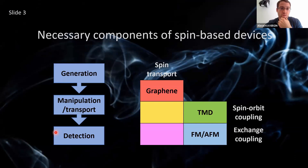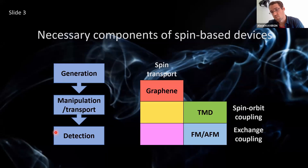I have drawn here a small diagram consisting of building blocks of any perspective or existing spin-based devices, which consists of generation of spin signal, manipulation of the transport, and then detection of the spin signal. And if I look at these blocks from the perspective of layered materials, the first thing that comes to mind is graphene. As we all know, it's an excellent host for spin transport, as it has superior quality, long spin relaxation, and so on.